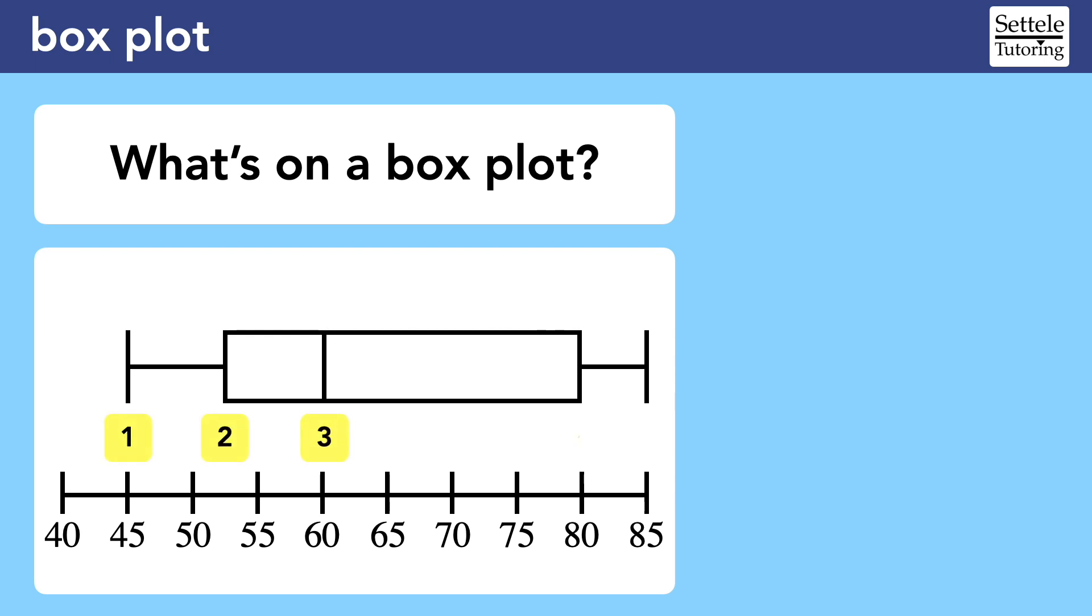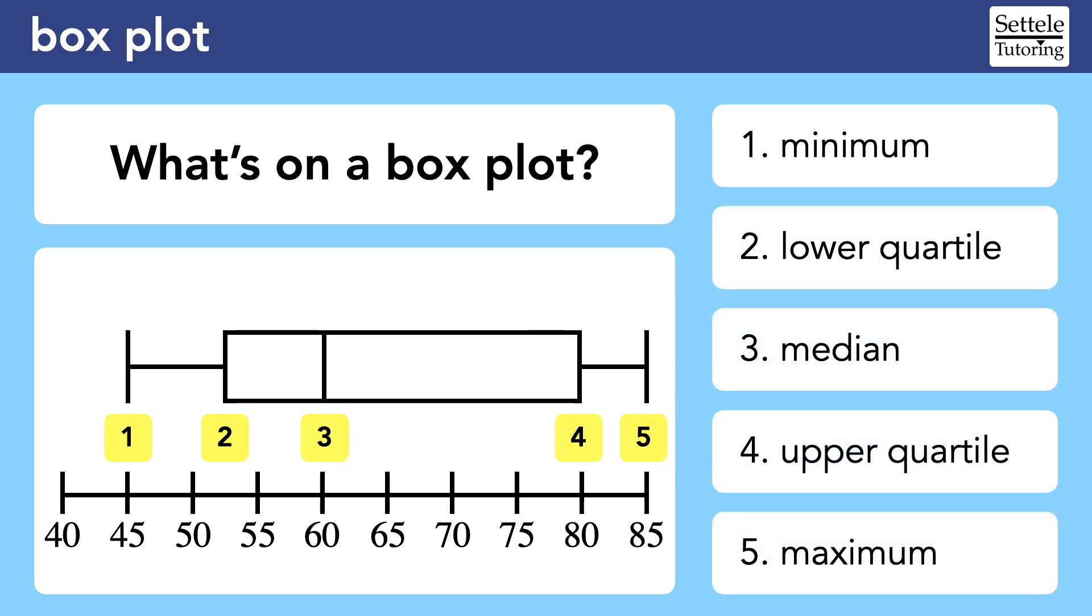A box plot tells us five things about the data set: the minimum, the lower quartile, the median, the upper quartile, and the maximum.